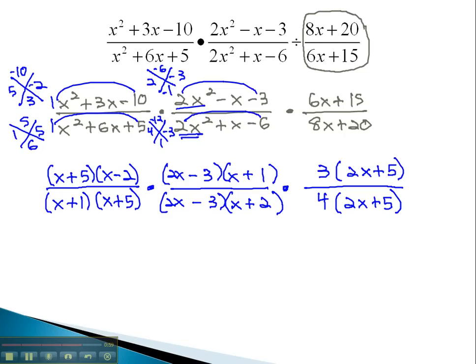Now that we have gone through and factored each of these fractions, we are allowed to do any reducing. The x plus 5 is in the numerator and denominator, so is an x plus 1. We also have a 2x minus 3 and a 2x plus 5, which show up in the numerator and denominators.